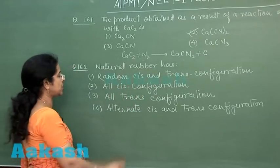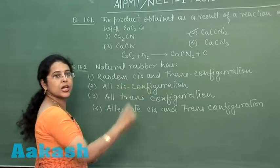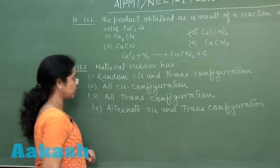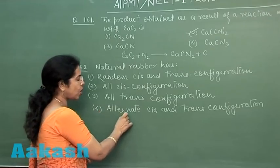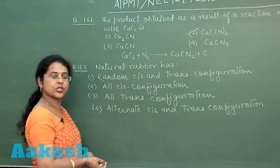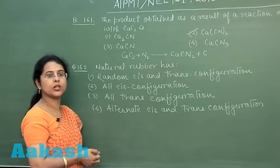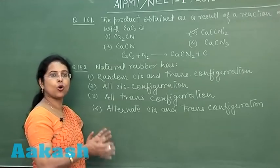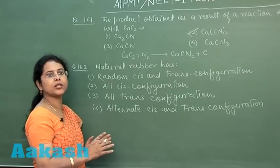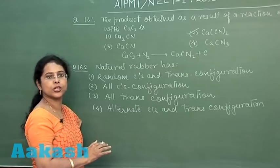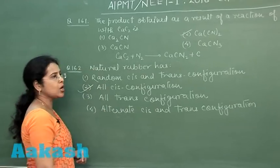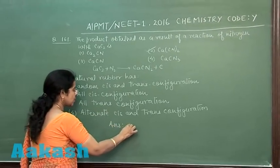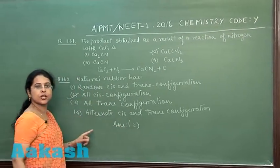Question number 162: natural rubber has which configuration? The options are random cis and trans, all cis, all trans, or alternate cis and trans. Natural rubber is a polymer of isoprene in which all units are joined in cis configuration, so the correct answer is the second option — all cis configuration.